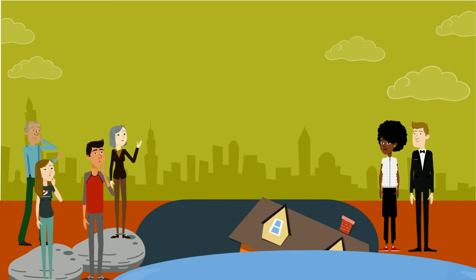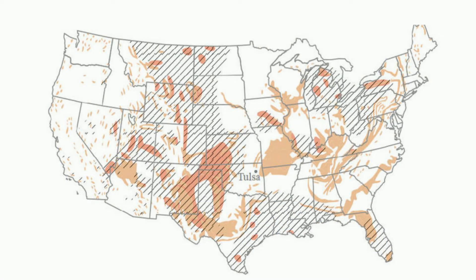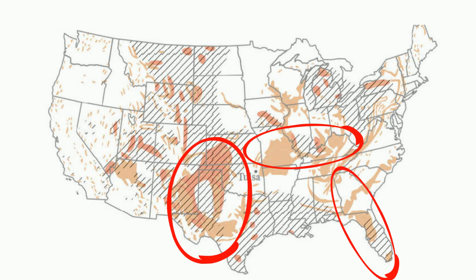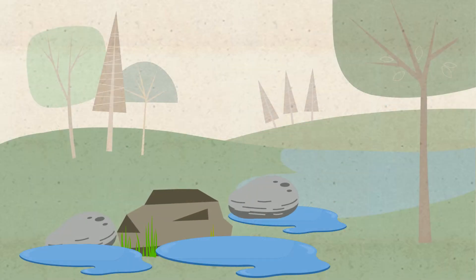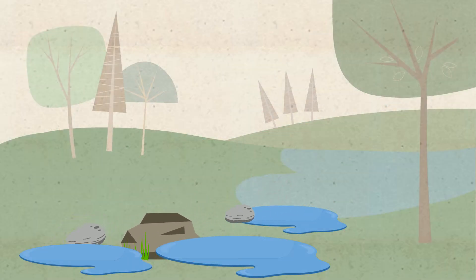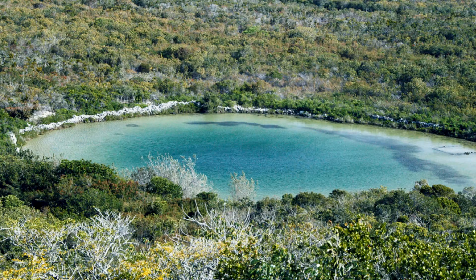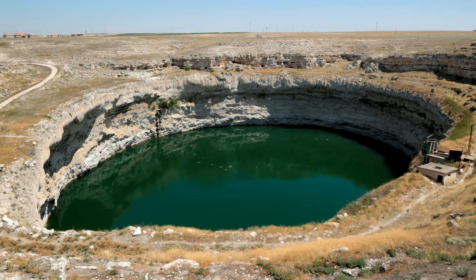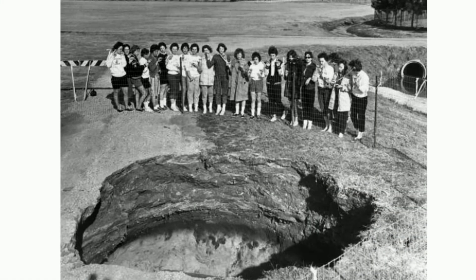The map below shows areas of the United States where certain rock types like gypsum, limestone, and dolomite occur. These rocks are easily eroded by underground water. Florida, Texas, Alabama, Missouri, Kentucky, Tennessee, and Pennsylvania have conditions favorable for the formation of sinkholes.